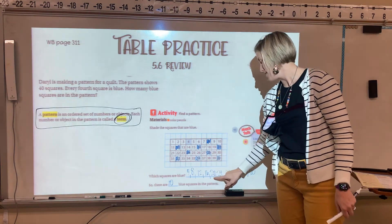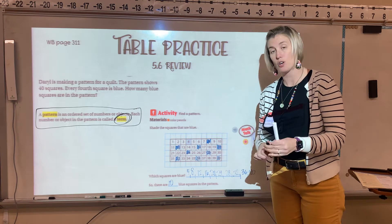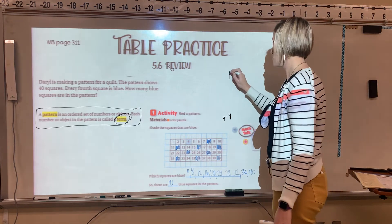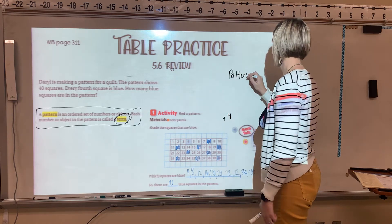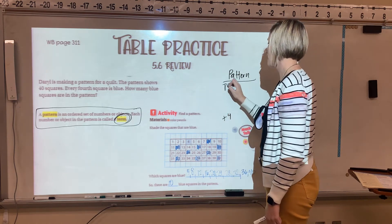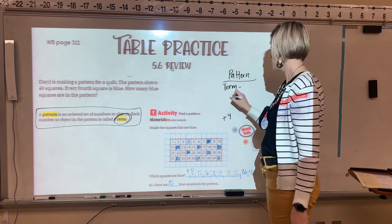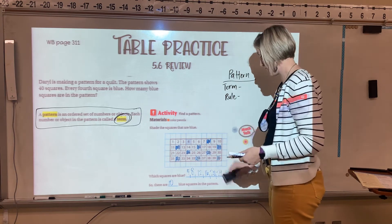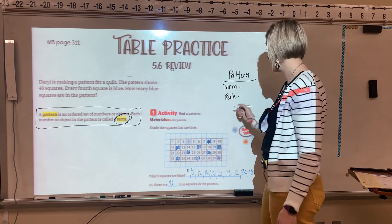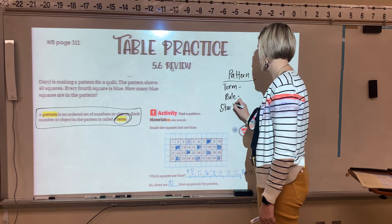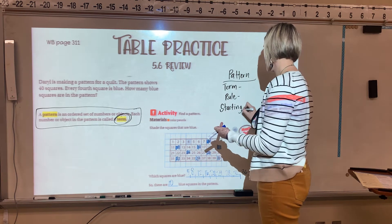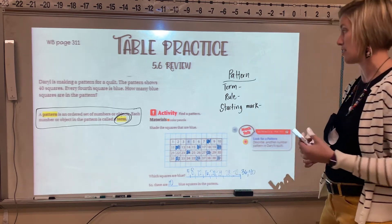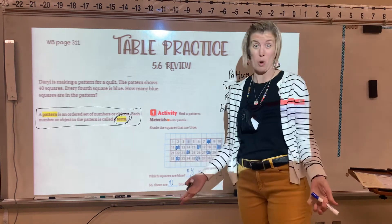Each number in the list is called a term. The rule for this pattern is plus 4. In each pattern, you're going to have a term — which is each number — you're going to have a rule, and you're always going to have a starting place. This question didn't really give us a starting mark, so we knew we were starting with 1.